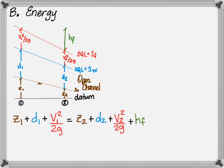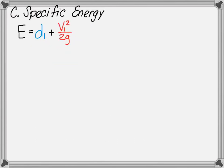The overall energy between point 1 and point 2 can be determined by summing the elevation head, the water surface depth, and the velocity head at point 1, and setting that equal to the elevation head, the water surface depth, the velocity head at point 2, plus the friction head. The specific energy, on the other hand, is used in channels and is based on only the water surface depth and the velocity head — it excludes the elevation head.